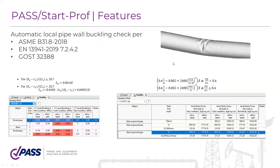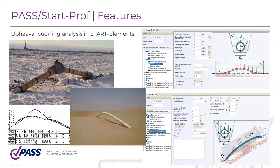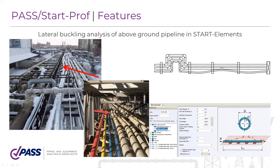StartProf also checks the buckling of the pipe cross section, with a special buckling report. Currently, StartProf can check buckling according to the ASME B31.8, European code for district heating, and the Ghost code. In the future, more codes and buckling check abilities will be added. StartProf can also calculate upheaval buckling and lateral buckling of above-ground pipelines.